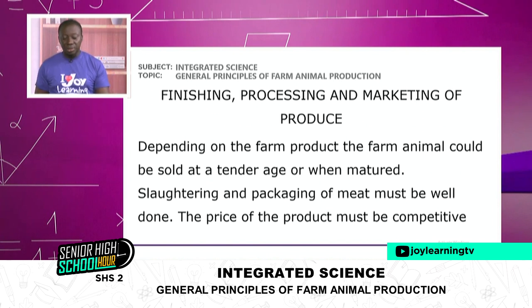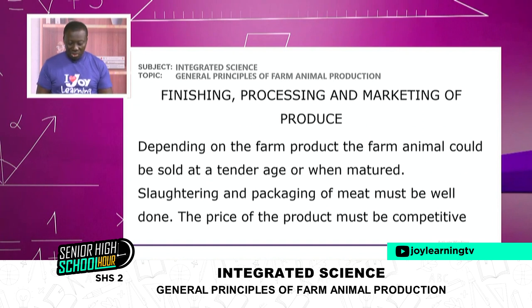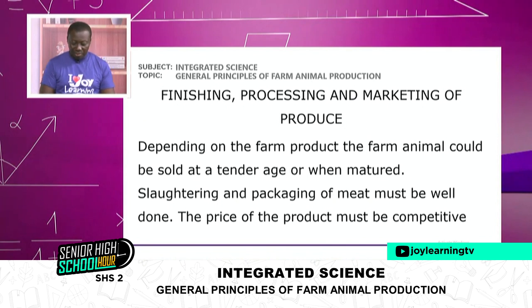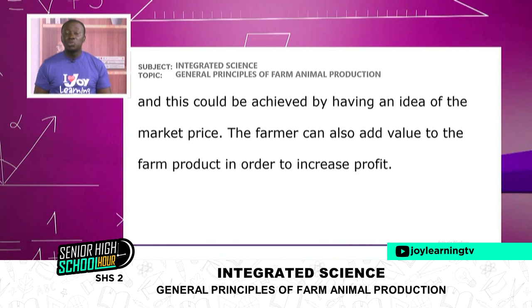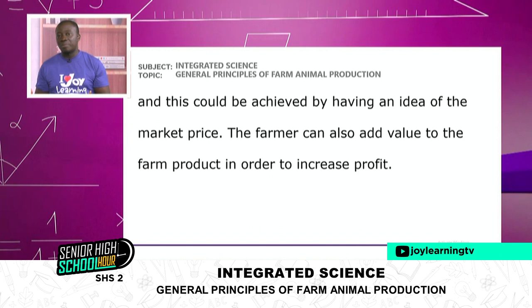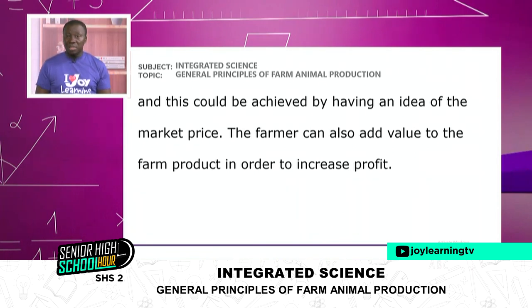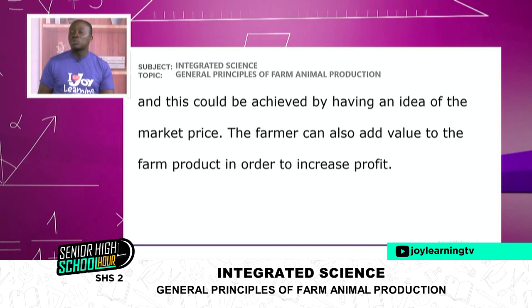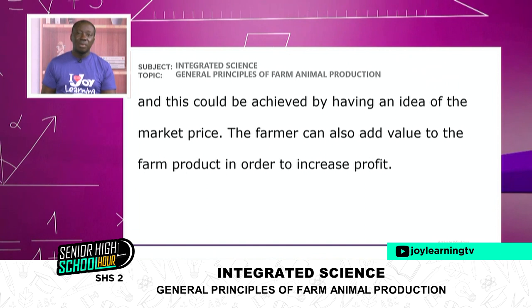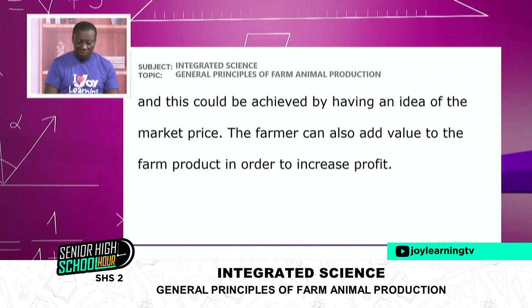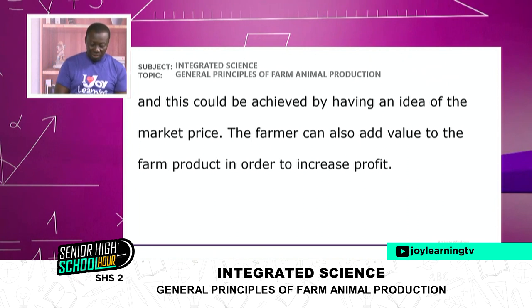Depending on the farm product, the farm animal could be sold at a tender age or when mature. Slaughtering and packaging of meat must be well done, and the price of the product must be competitive. When you kill or slaughter them, you have to do the packaging under a hygienic environment so that you can attract good markets and get the income you want. This could be achieved by having an idea of market price — before you can sell them, you must know how much they are selling for at the market.